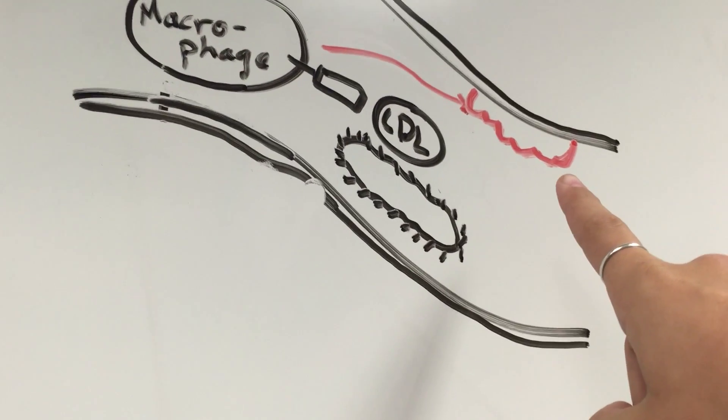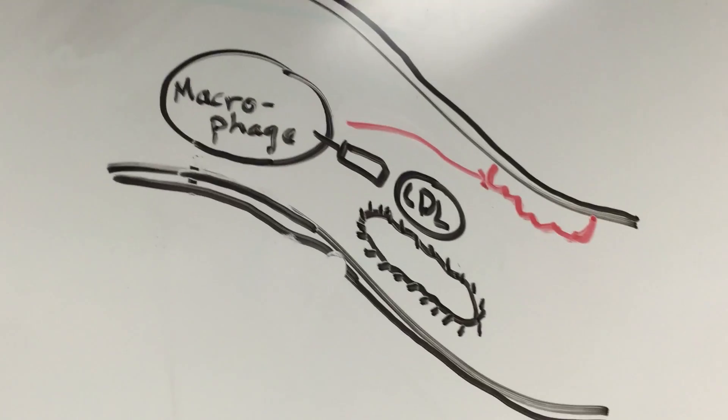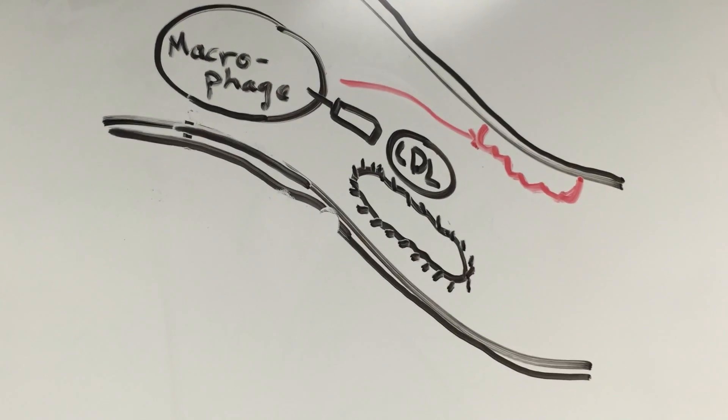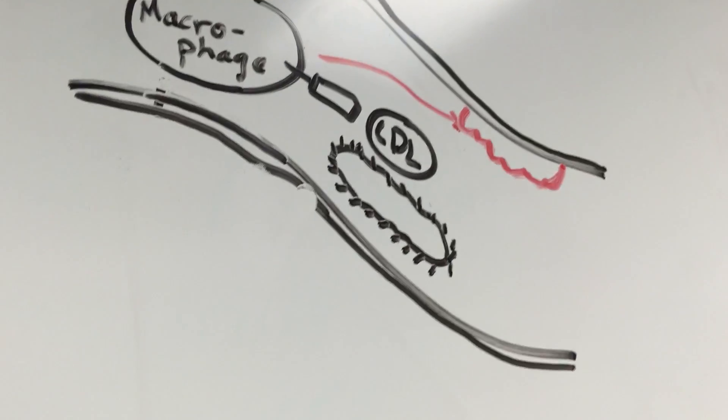If enough of these foam cells build up, a plaque can form and cause the arteries to harden and become stiff. The stiffening can cause inflammation and high blood pressure.